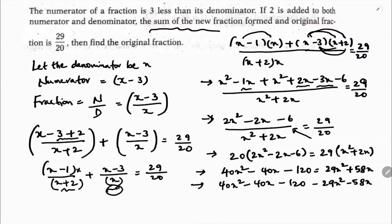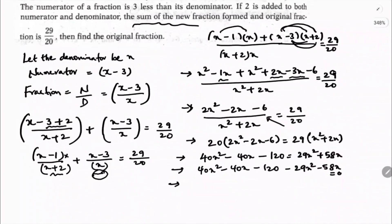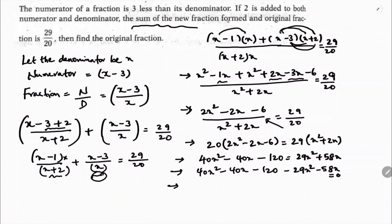Minus 58x equals 0. So rearranging: 40x squared minus 29x squared gives 11x squared; minus 40x minus 58x gives minus 98x; minus 120 equals 0. So the quadratic equation is 11x squared minus 98x minus 120 equals 0.